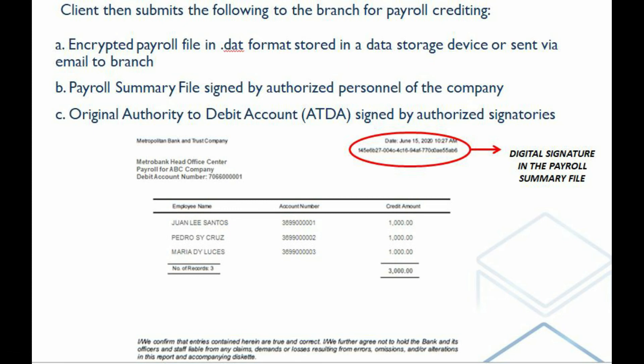The encrypted payroll file can be stored in a data storage device or sent via email to the branch. The payroll summary file and authority to debit account should be printed, signed by the authorized signatory, and delivered to the Metrobank branch.